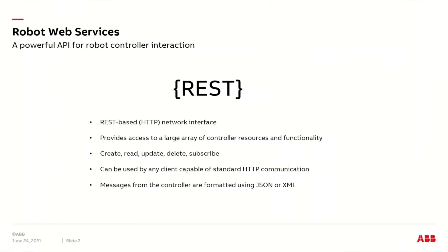Robot Web Services is a REST-based network interface. REST is a widely used set of principles for API design, which very simply put leverages the HTTP protocol used in standard web browsers. Robot Web Services provides access to a large portion of the controller's resources and functions. Typically, it can be used to create, read, update and delete those resources. And in many cases, it can also be used to subscribe on the resources, allowing the application to react on changes. This is achieved using the WebSocket protocol.